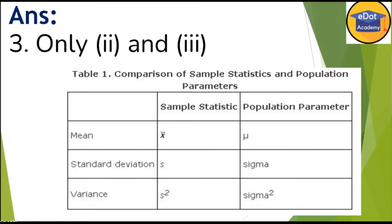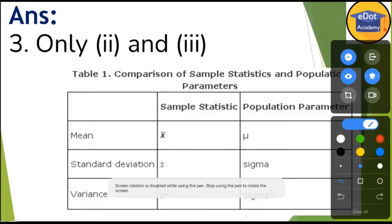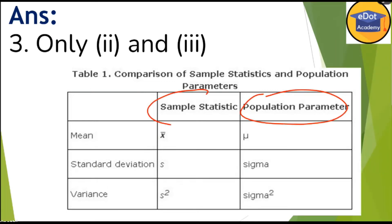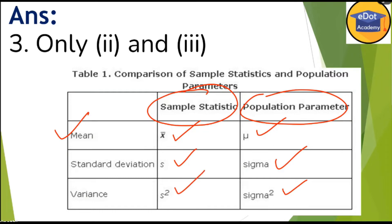I've shown here a comparison of sample statistic and population parameter. In the third column you can see population parameter. When we find the mean, the mean of the population is represented by mu, and mean of sample — the statistic — is called x-bar. Similarly, standard deviation of population is sigma, while standard deviation of the sample statistic is s, and variance is sigma-squared for population parameter and s-squared for the sample.